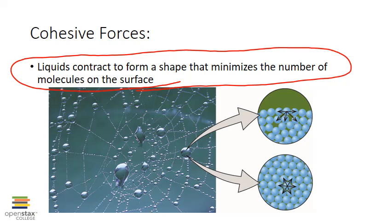The net result is that liquids contract to form a shape that minimizes the number of molecules on the surface — in other words, a shape with minimal surface area, and that shape is a sphere. This is why small amounts of liquids tend to form spherical droplets where the ratio of surface area to volume is minimal. When the amount of water is greater, the influence of gravity is also greater, and the shapes are less spherical.